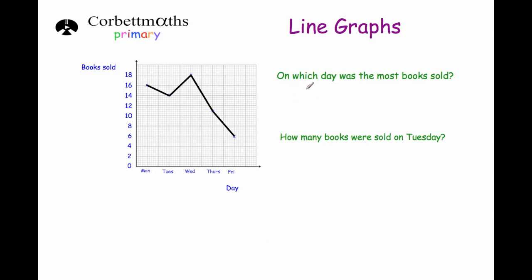The first question says: on which day of the week was the most number of books sold? So if we have a look, we've got Monday, Tuesday, Wednesday, Thursday and Friday. The highest point — the highest number of books sold — was on Wednesday, and there were 18 books sold. So the answer is Wednesday, because that's the highest point on the line graph.